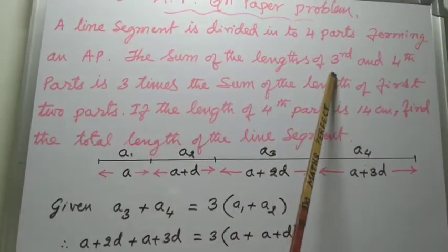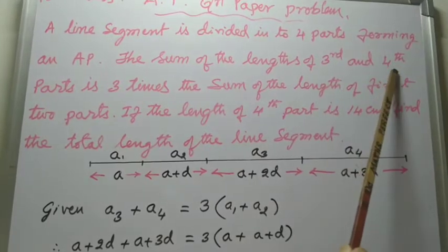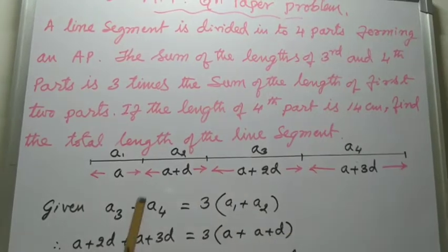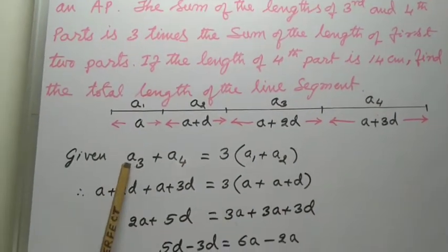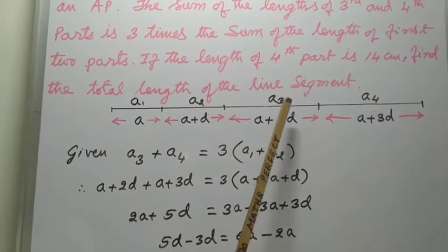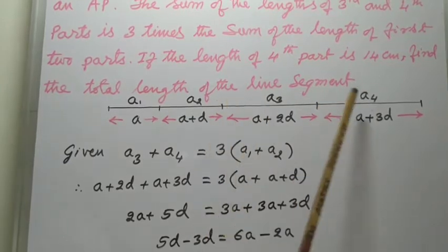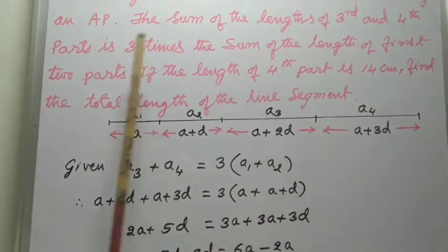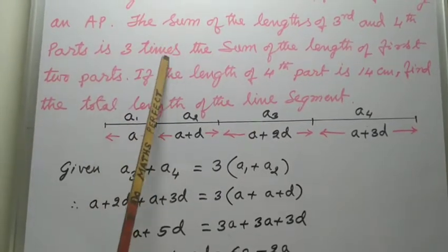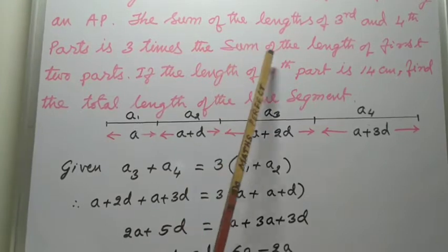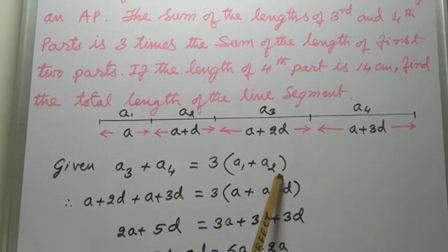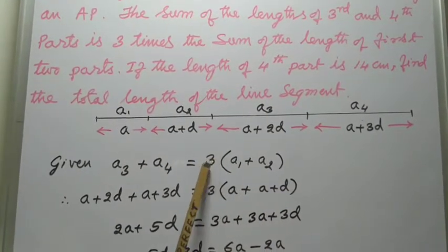The sum of the lengths of the third and fourth parts — observe this. A3 means the third part, A4 means the fourth part. The sum of these two parts is three times the sum of the first two parts. Three times means multiplication. So A3 plus A4 equals 3 times A1 plus A2.